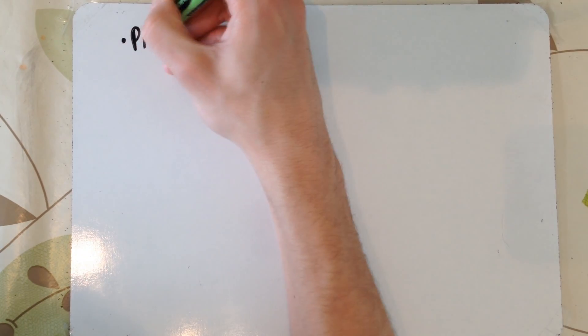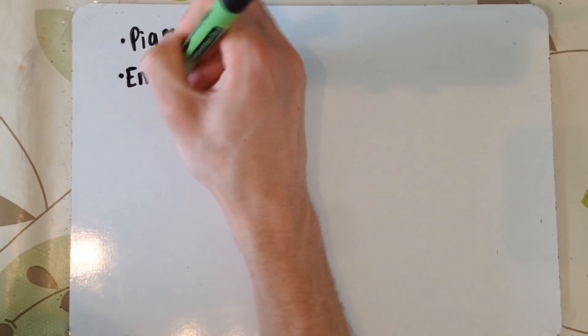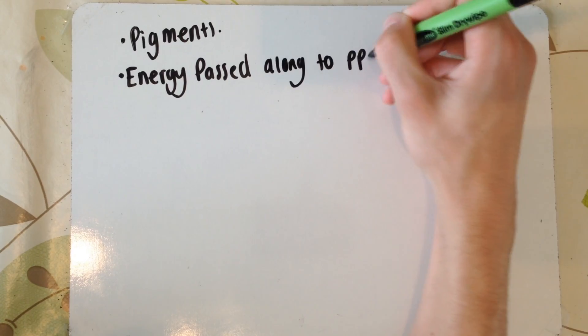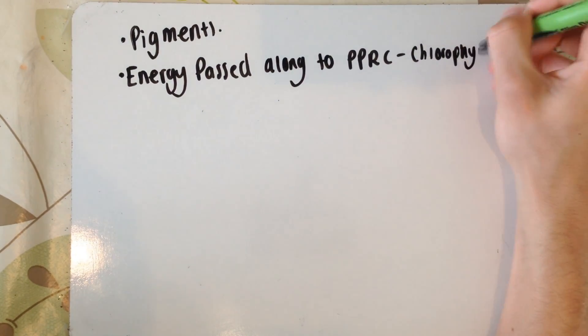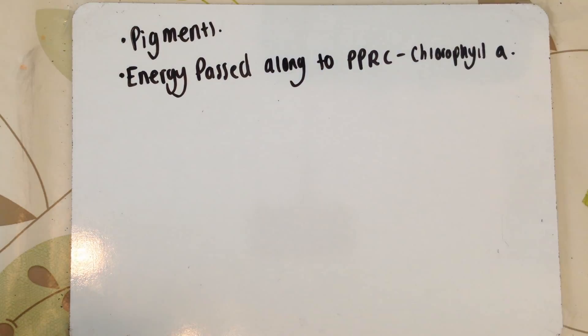If you're still with me guys, we've got the pigments, and the energy is passed along from these pigments to chlorophyll A. These pigments include chlorophylls, so not only is the bottom one chlorophyll A, we've got some other pigments included there in those squares I showed. These are called chlorophyll B.